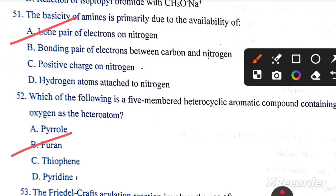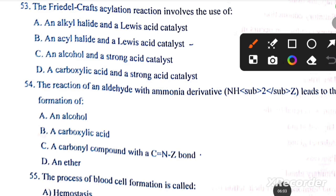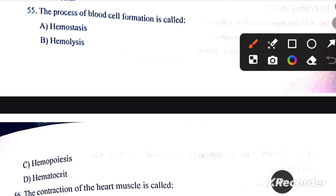Furan. The Friedel-Crafts acylation reaction involves the use of an acyl halide with a Lewis acid catalyst. The reaction of aldehyde with ammonia derivative leads to the formation of a carbonyl compound with C and N bond. The process of blood cell formation is called... the answer is option C.